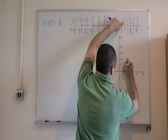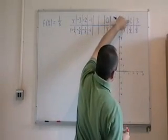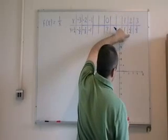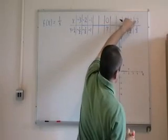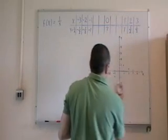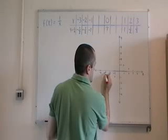When x is 1, I have 1. When x is 2, I get a y value of 1 half. When x is 3, I get a y value of 1 third. Okay, so let's join these points up and see what we've got.